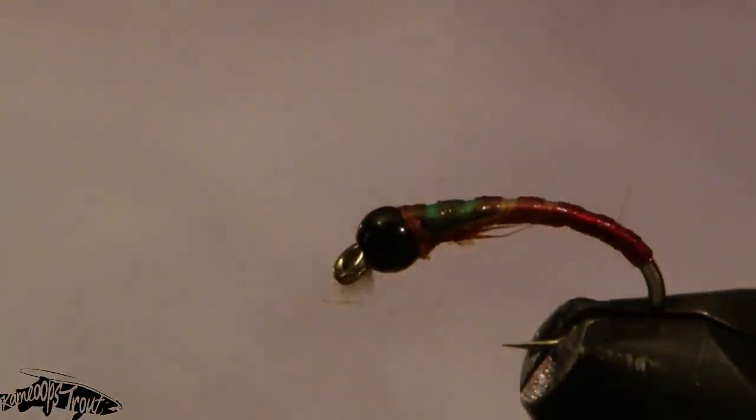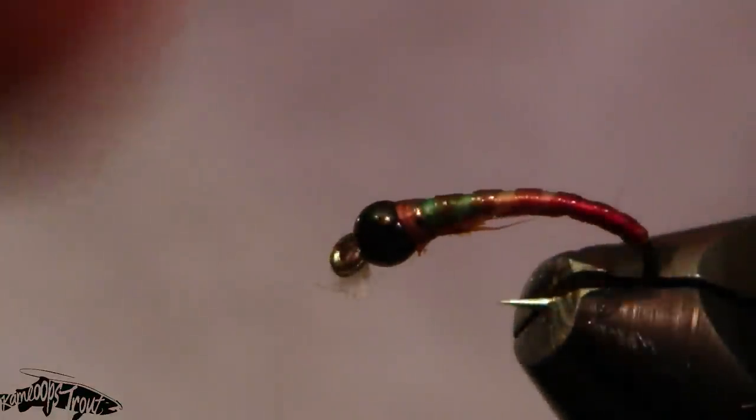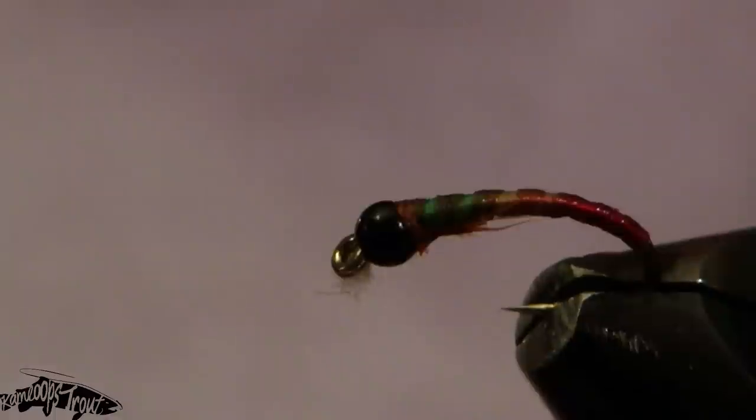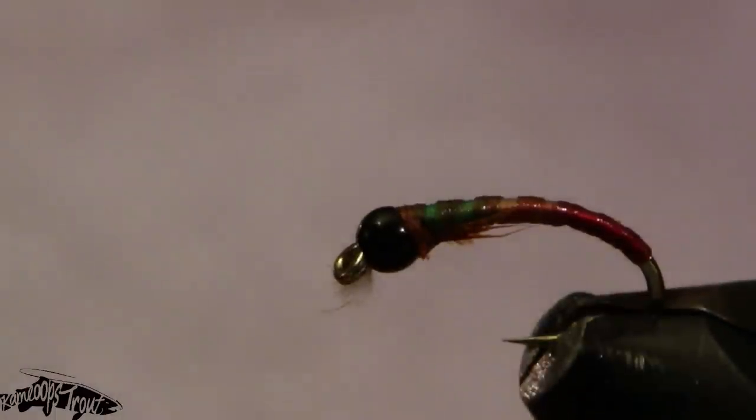I'll use a little bit of solar res just on the wing casing and the collar behind the bead, and even on the red butt.